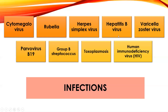Babies born to hepatitis B positive mothers are treated differently after birth — bathed right away and given the hepatitis B vaccine and hepatitis B immunoglobulin, hoping to prevent them from converting to positive status. There are many people from other countries who have had a hepatitis B vaccine that will show up as positive, so you have to make sure you know what you're testing for when looking at those labs.